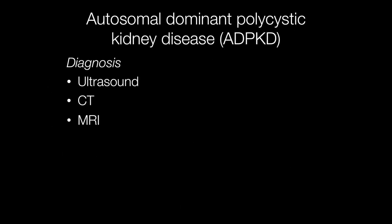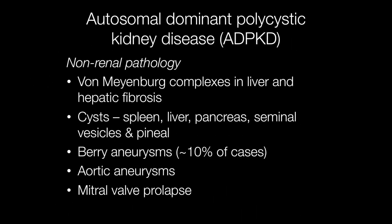Diagnosis may be made with ultrasound scans, CT, and/or MRI. Extra-renal pathology associated with ADPKD includes von Meyenberg complexes in the liver and hepatic fibrosis. Von Meyenberg complexes are biliary hamartomas. Cysts may be found in the spleen, liver, pancreas, seminal vesicles, and pineal gland. In around 10% of cases, berry aneurysms are present. In addition, aortic aneurysms may occur, as well as mitral valve prolapse.